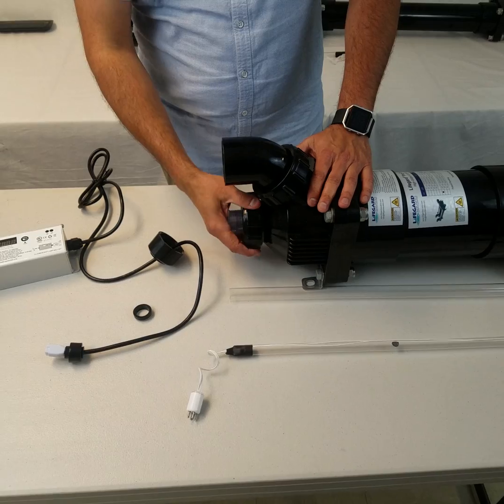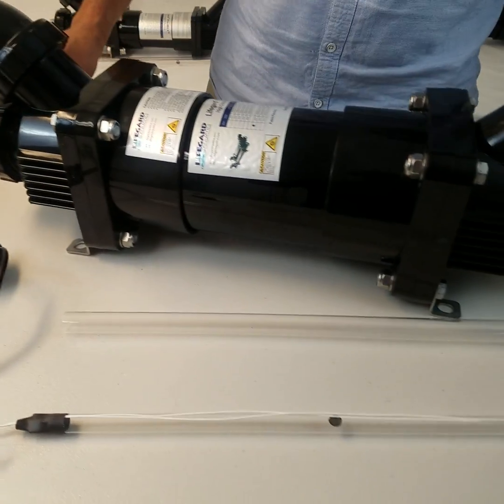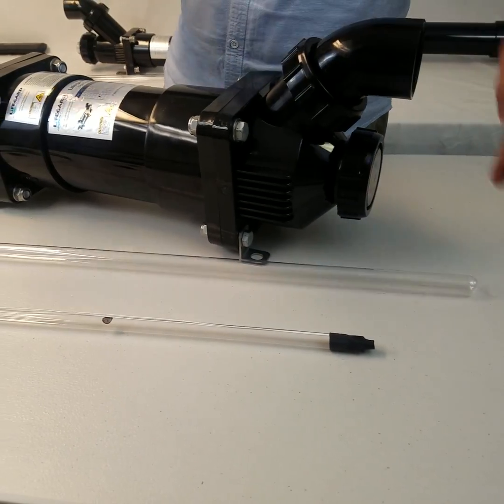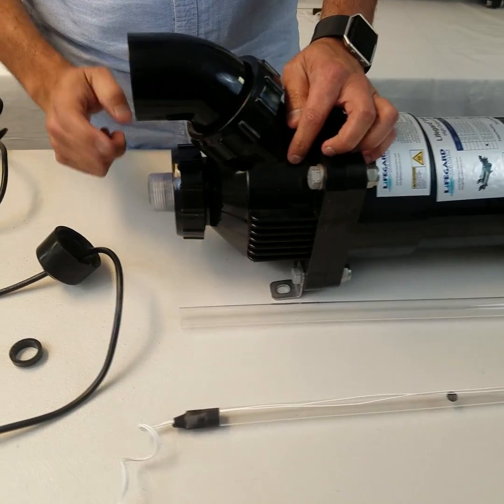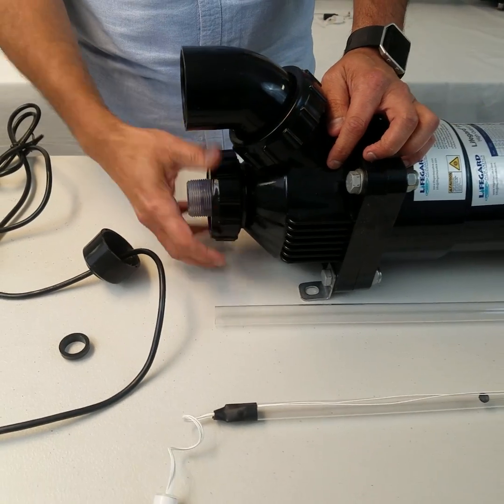In the UV there is a side that has the threads on it and the other side is flat. You can switch them around however you want, they're both pretty much the same standard size. The threaded side is where the quartz sleeve and bulb will go in.